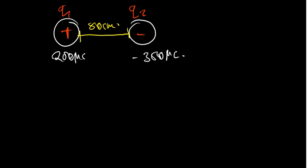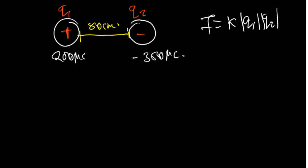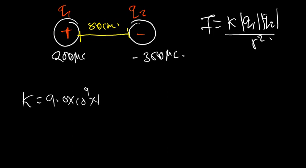We need to find the magnitude of the electric force. The electric force is given by the formula F = kQ1Q2 / R², where k is Coulomb's constant, which is 9.0 × 10⁹ Newton metre squared per Coulomb squared.